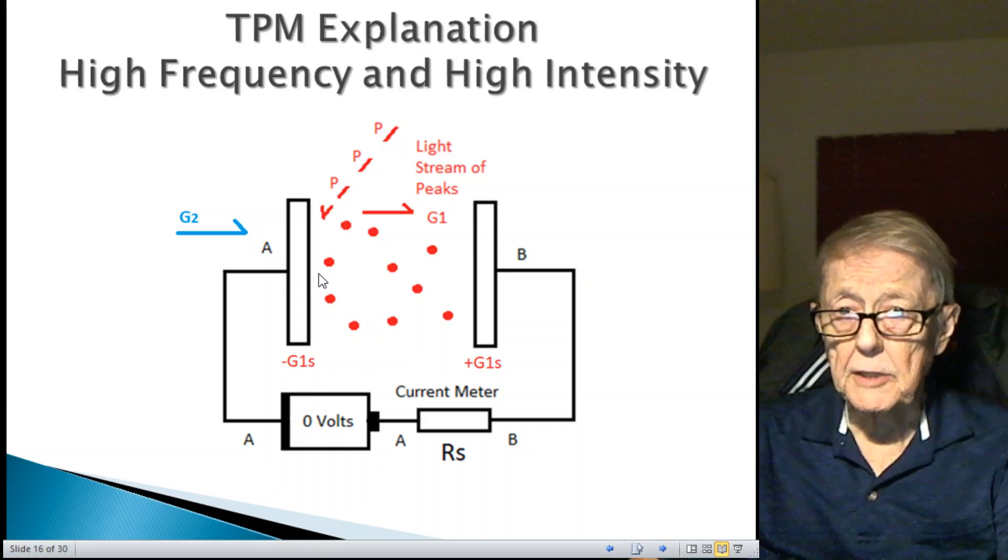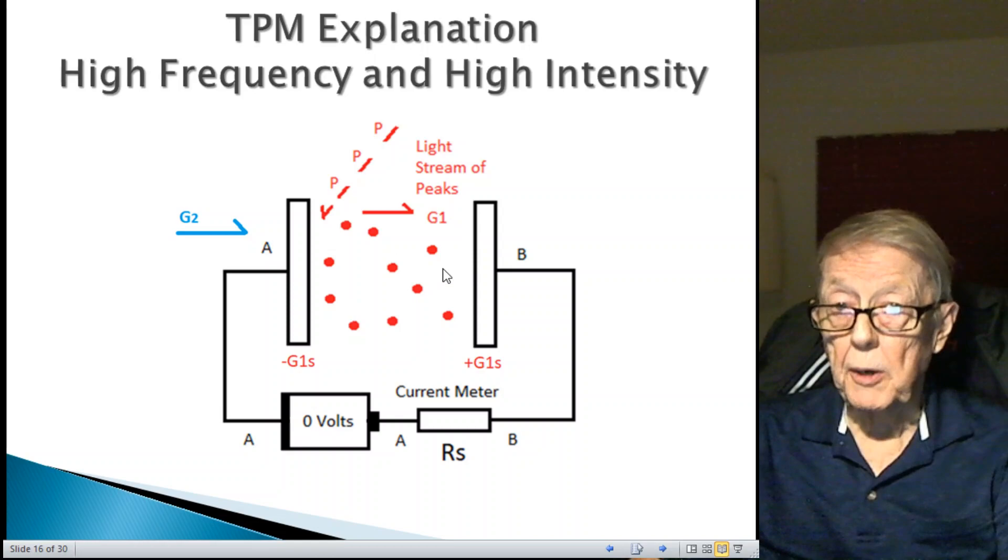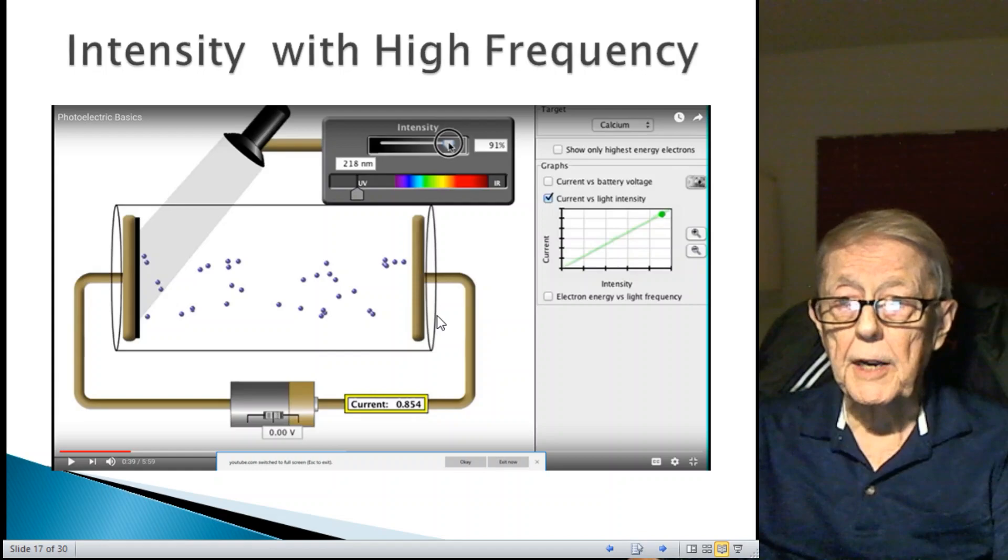G2 force, G2 gravity, is the primary reason these electrons, or I should say G1 particles, move towards this plate.